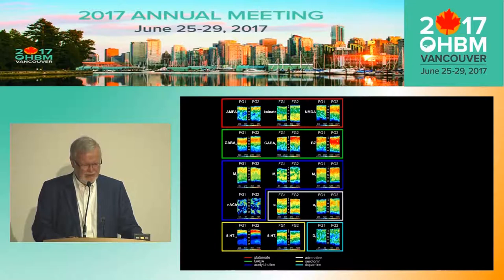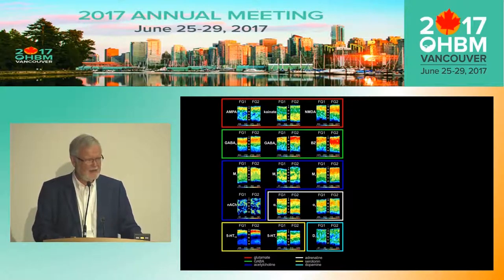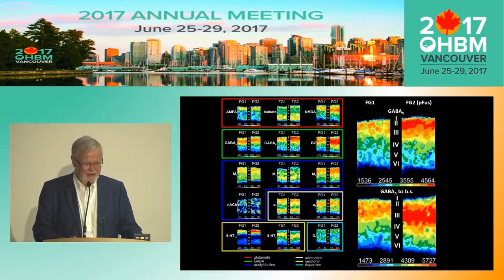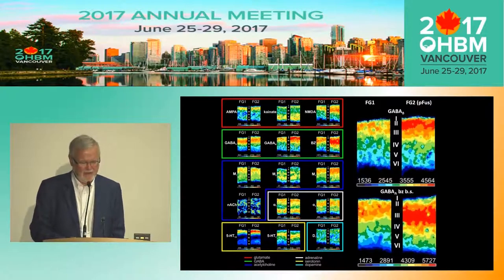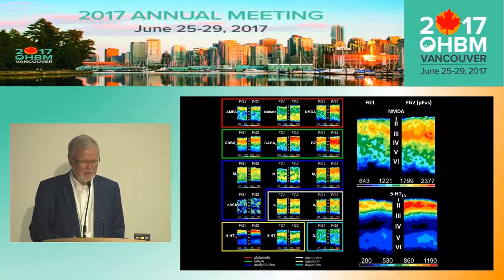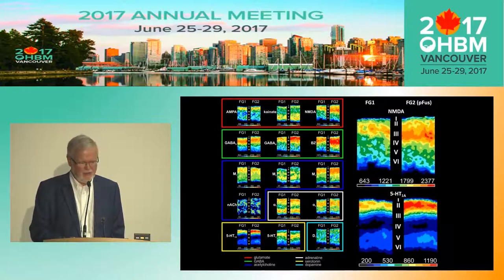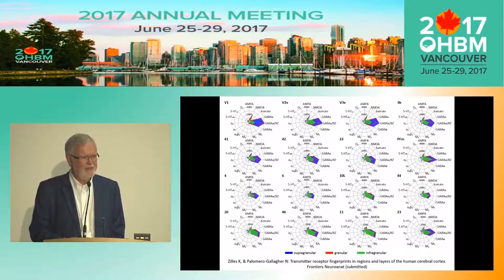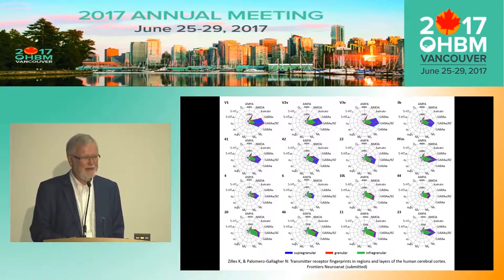Now we studied the laminar receptor fingerprints. Here are small parts of cortical areas showing the high heterogeneity of receptor expression across different cortical layers. At higher magnification you can see this for the GABA-B receptor and the benzodiazepine binding sites of the GABA-A receptor in FG1 on the left and FG2 on the right. The NMDA receptor is much more highly expressed in the supragranular layers of FG2 compared to FG1, while the 5-HT1A receptor is also expressed at higher density in FG2 compared to FG1. We started to map the receptor fingerprints of 44 different cortical areas.